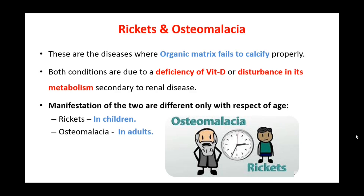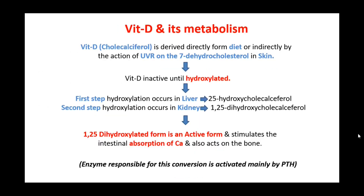The manifestation of these two diseases, rickets and osteomalacia, are only different with respect to age. Rickets occurs in children and osteomalacia in adults. It is very important to know how the metabolism of vitamin D occurs in our body.